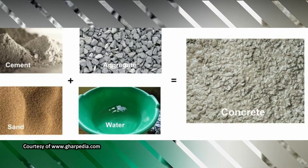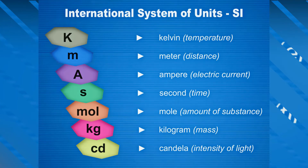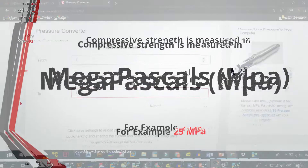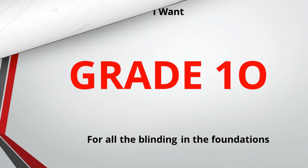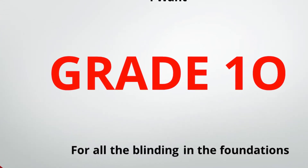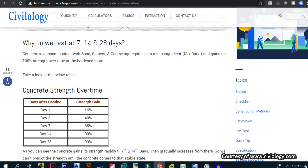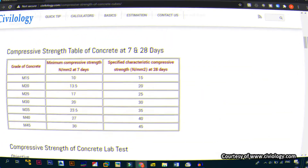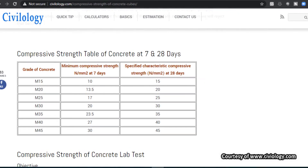I use SI units, so the strength we're referring to is measured in megapascals, which is equivalent to one newton per square millimeter. To help you understand: if someone says they want grade 10 concrete, it means the concrete should have a minimum compressive strength of 10 MPa after 28 days. Grade 15 means 15 MPa, grade 20 means 20 MPa, grade 25 means 25 MPa, and so on.